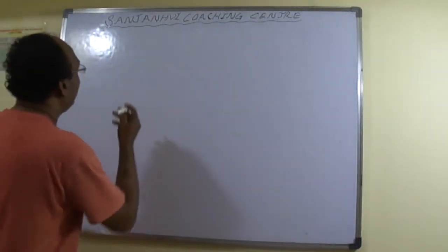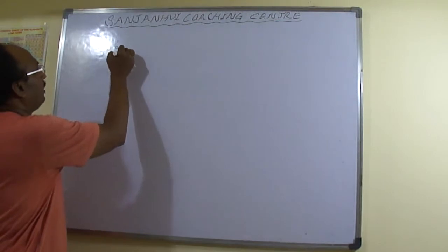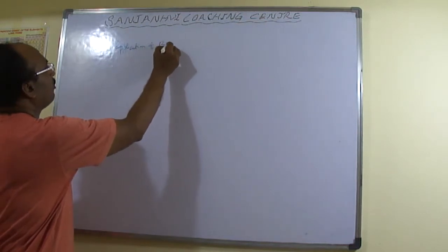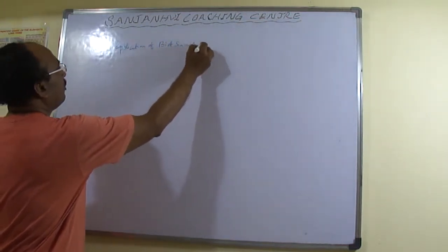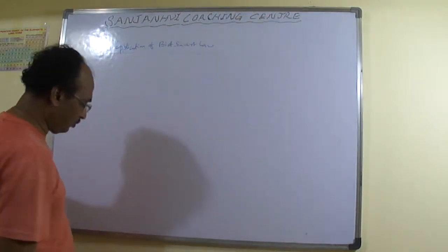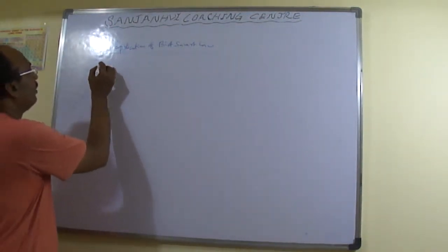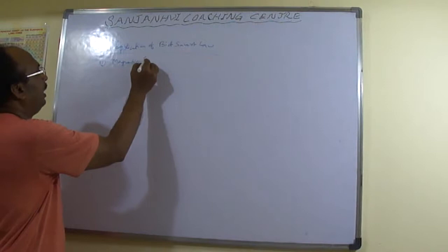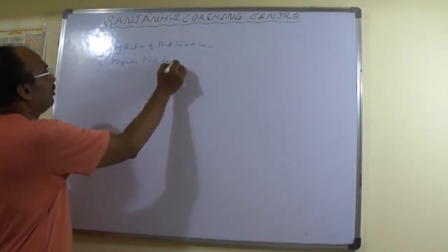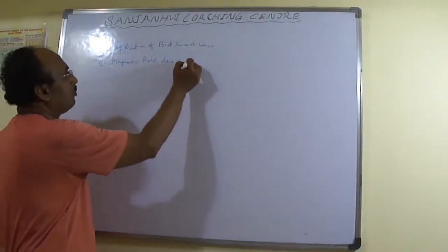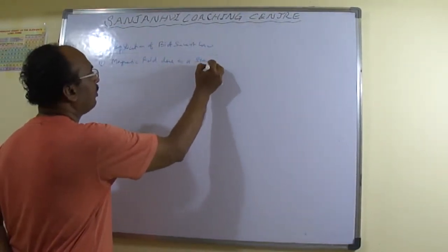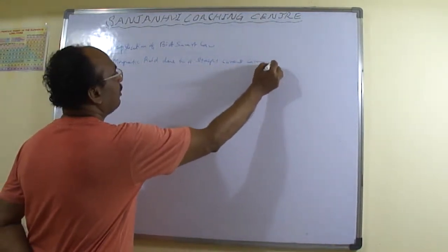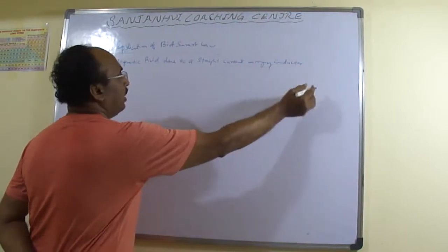Let us discuss the applications of Biot-Savart Law. First, we will find the magnetic field due to a straight current-carrying conductor or wire.